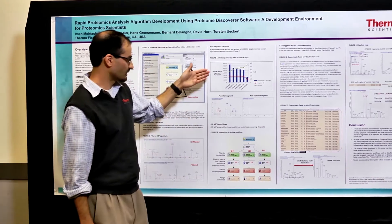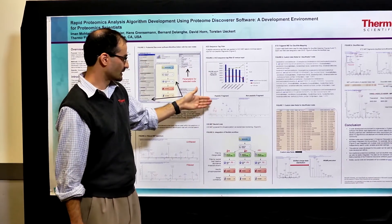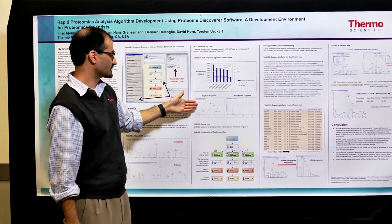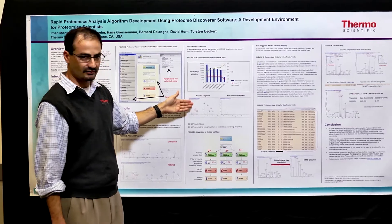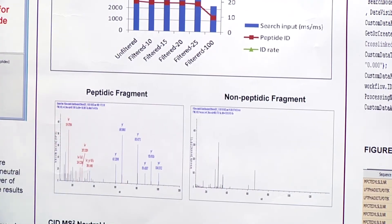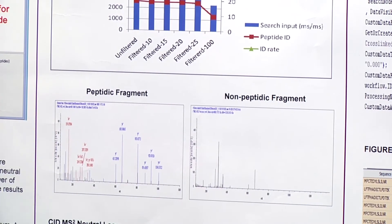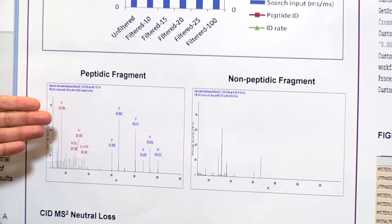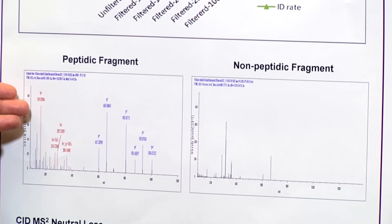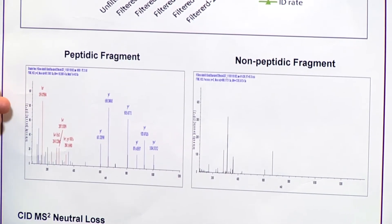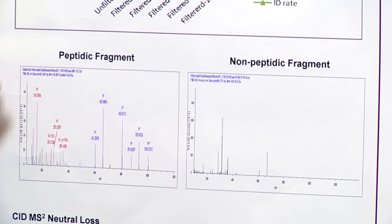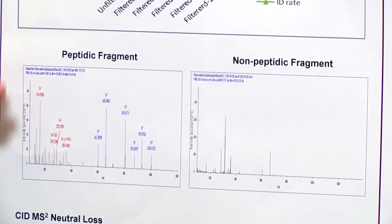What I present here is a different node — an HCD sequence tag filter, which is another spectrum processing filter. You can again see that the displays are properly shown without having to reprogram or develop a GUI to be able to show these spectra.